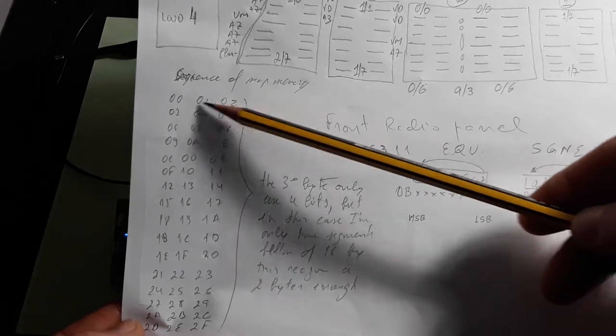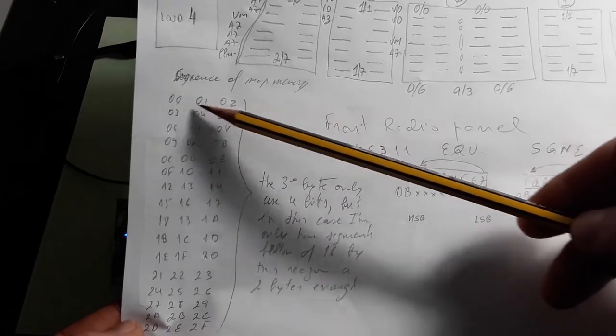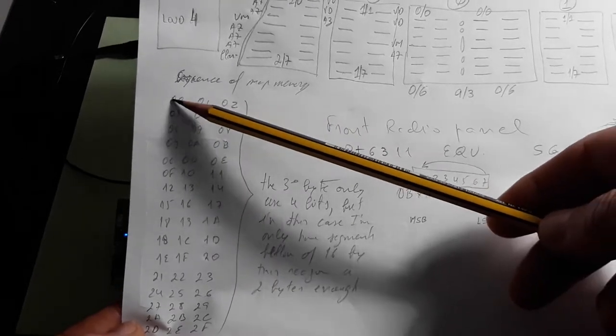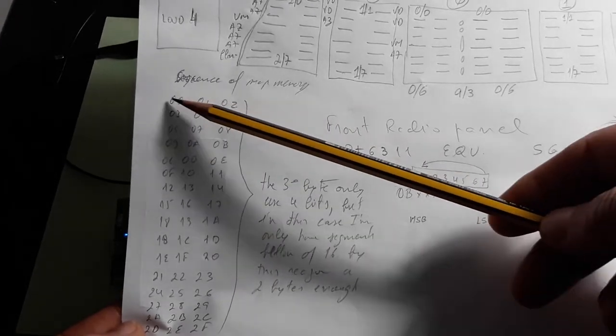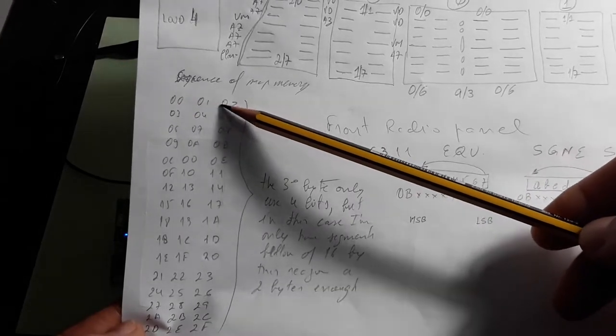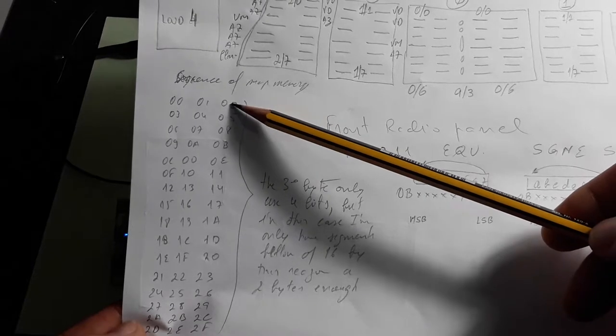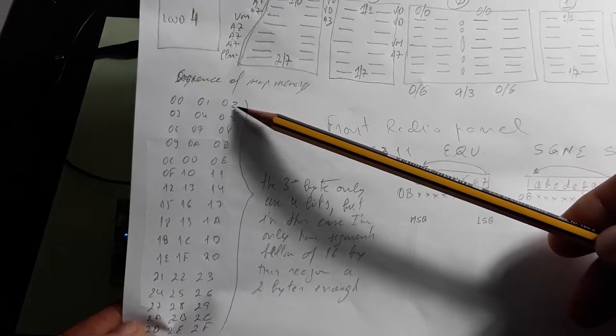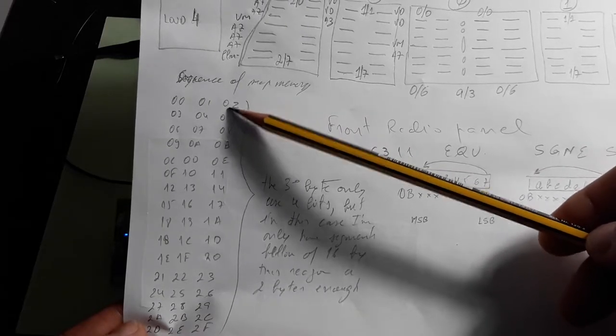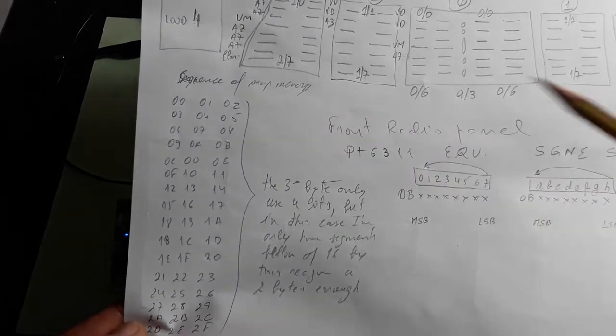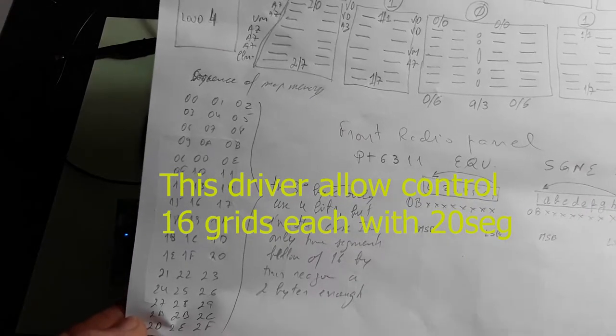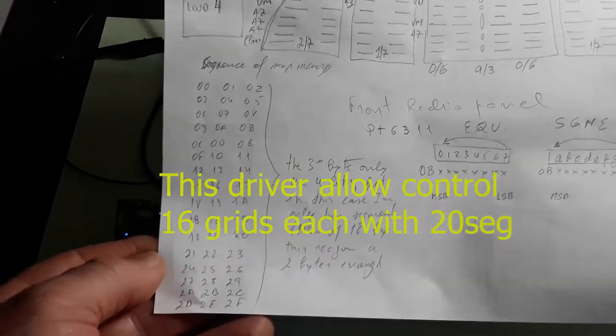For example, to make the control of the segments belonging to the first display or the first grid, you need to fill these two bytes here: 00 and 01, and here 02. You only use half a byte - you only send four bits because the other four is not used.